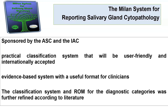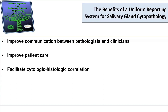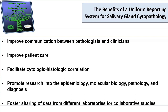We analyzed all papers published from 1980 to 2017, and the classification system and risk of malignancy for the different categories were refined according to the literature. Benefits of a uniform classification system include: improving communication between pathologists and clinicians; facilitating cytohistological correlation; promoting research in epidemiology, molecular biology, and pathology; and fostering data sharing across laboratories for collaborative studies. There are now several studies concerning the Milan system from different institutions worldwide.